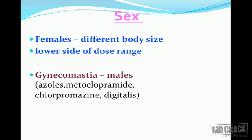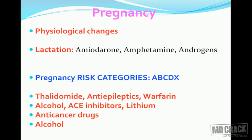Sex is another factor. Females have a different body size and usually require the lower side of the dose range. In males, gynecomastia can occur with drugs like spironolactone and metoclopramide. Pregnancy involves a lot of physiological changes. When the mother is lactating, she is likely to excrete drugs through milk. Three important drugs to remember are amiodarone, amphetamine, and androgens. Pregnancy risk categories are A, B, C, D, or X.